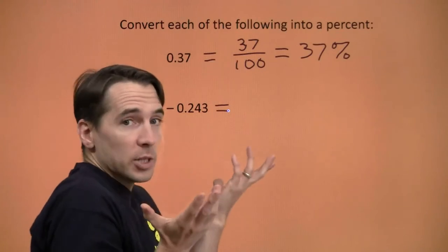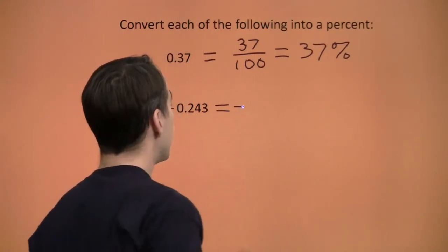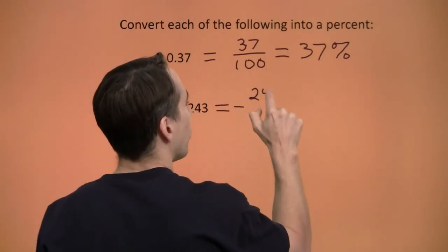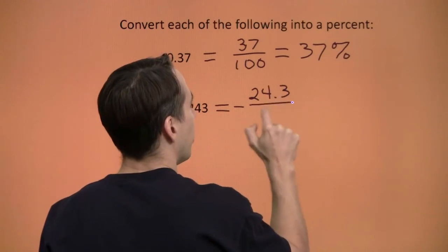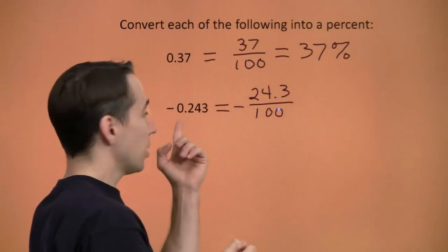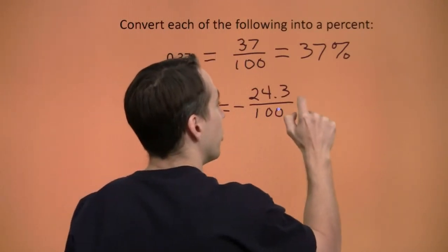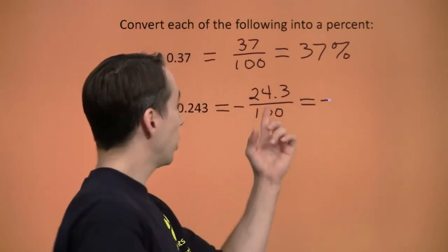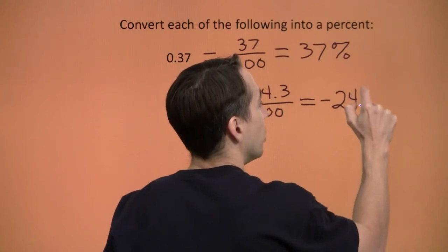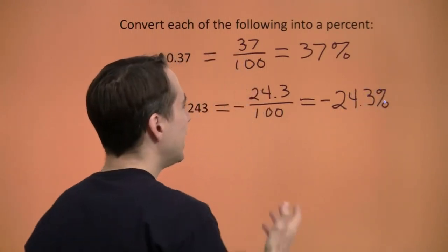Now I can turn negatives too — nothing special about negatives. I need to write this as something divided by 100: 24.3 divided by 100. You see dividing by 100 means moving the decimal point two places to the left, giving us 0.243. Going the other direction, 24.3 per 100 is a percent — 24.3 percent.